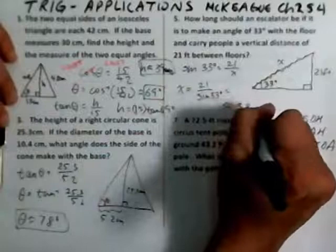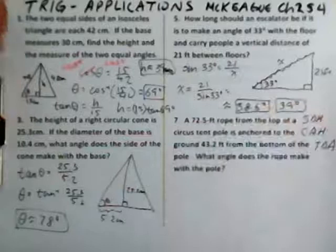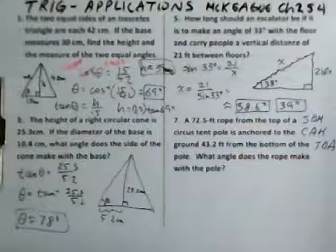Calculating 21 divided by sine of 33 degrees gives approximately 38.6, or about 39 feet.